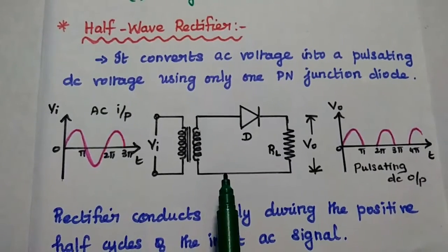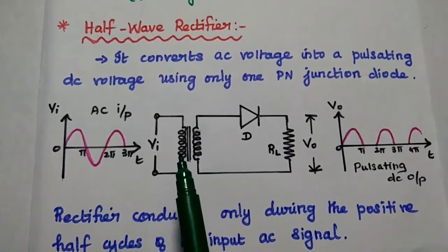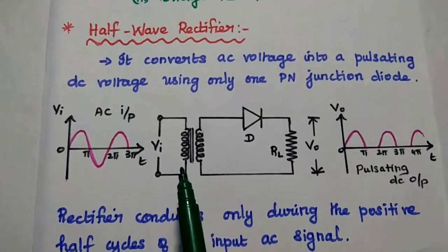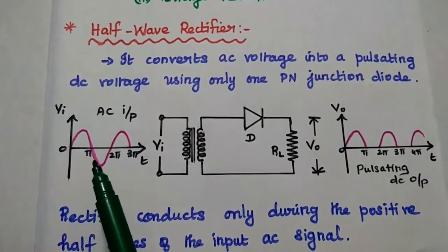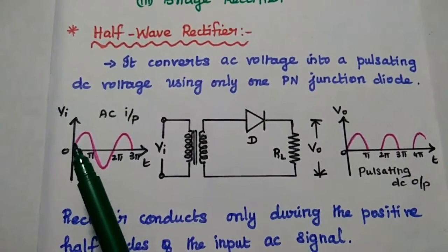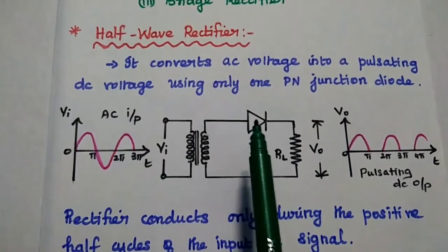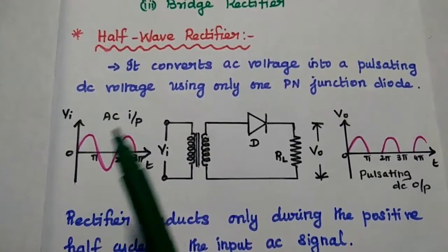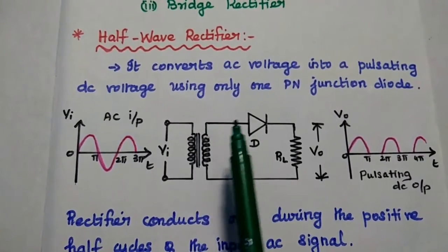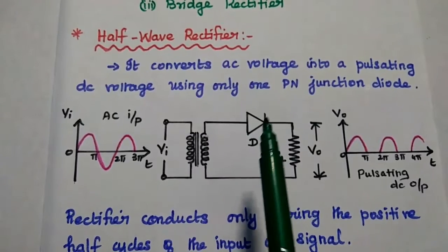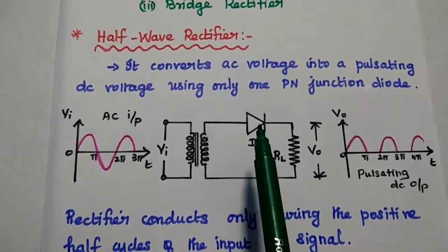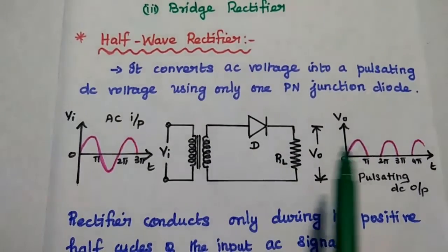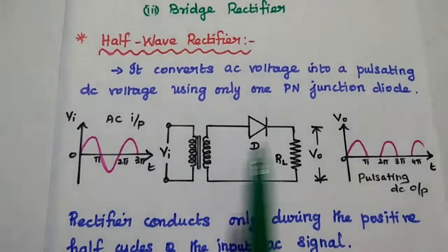This is the circuit diagram. The input is given to the primary of this transformer. Here we are using a step down transformer with an AC input signal. During the positive half cycle, the diode is forward biased because the input is positive. Whenever the positive input is given, both are positive — that means forward biased. If the diode is forward biased, it starts conducting the current through the load, and we can get the output similar to the input.